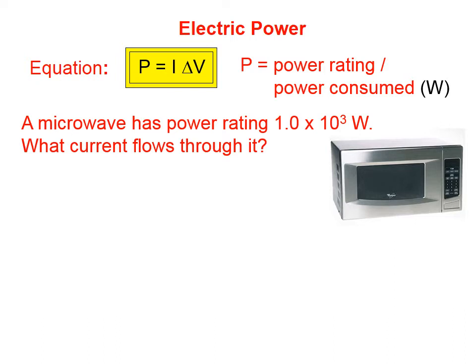A microwave has a power rating of 1.0 times 10 to the third watts. What current flows through it? We are given the power, and we want to know the current, which is symbolized by capital I.